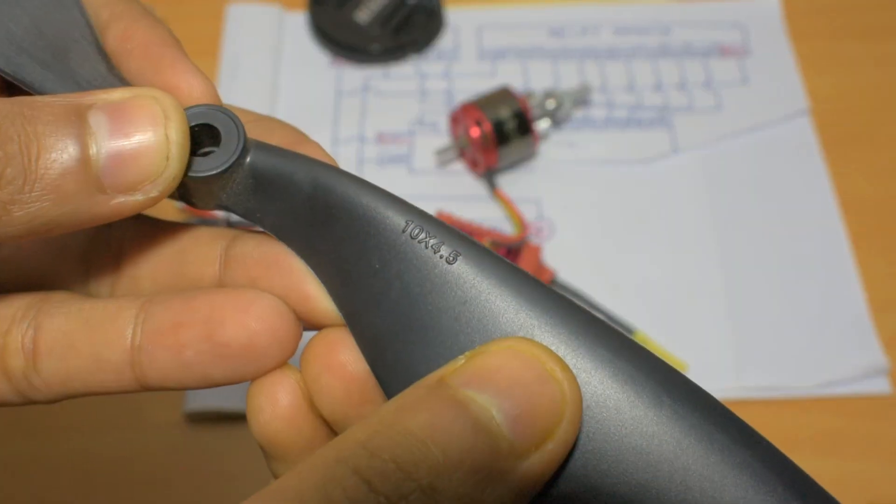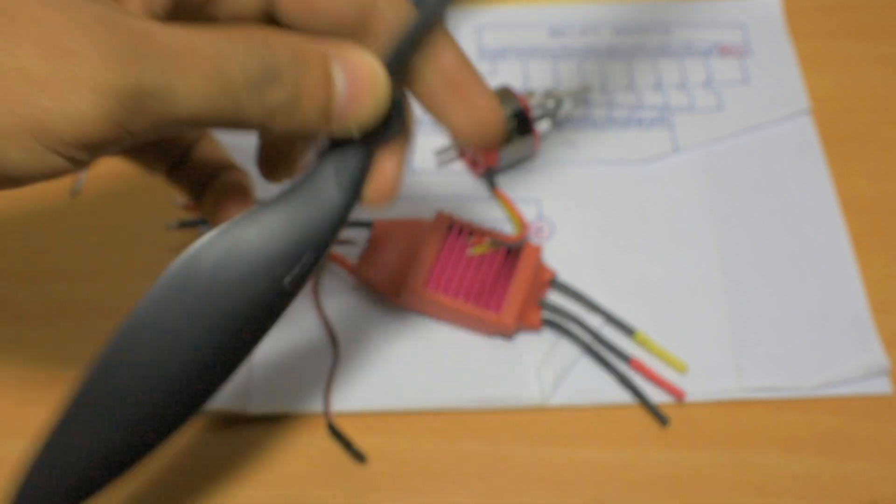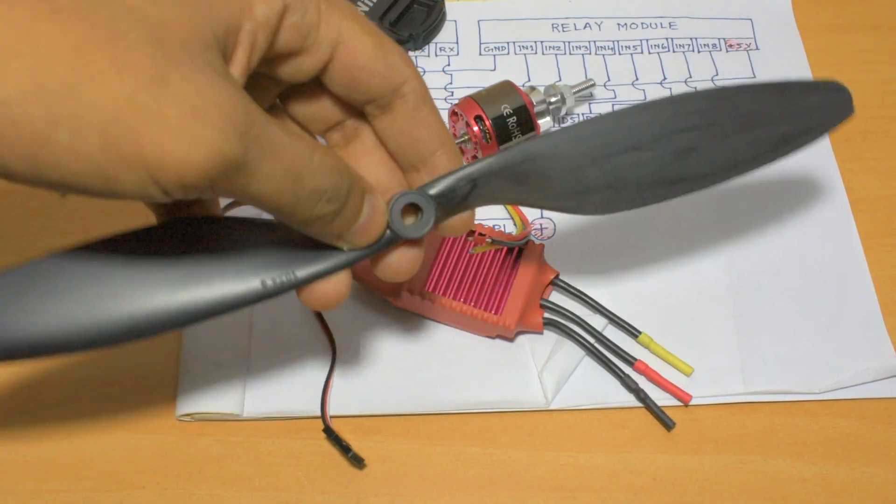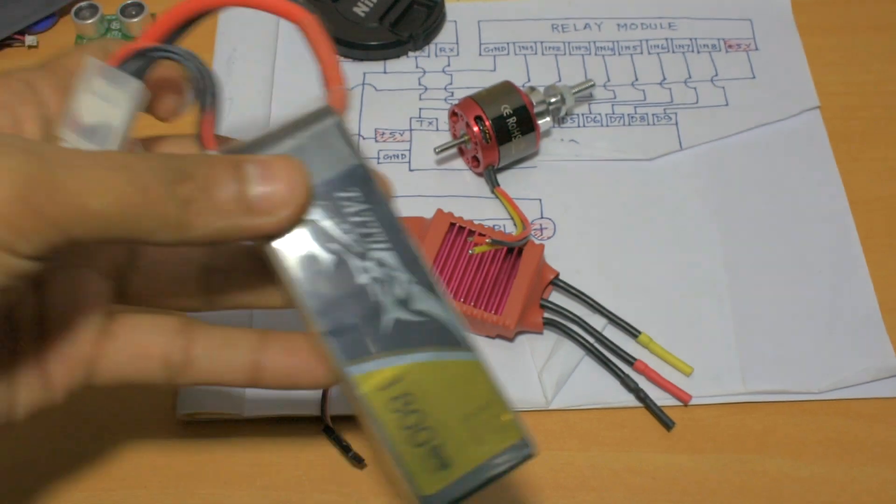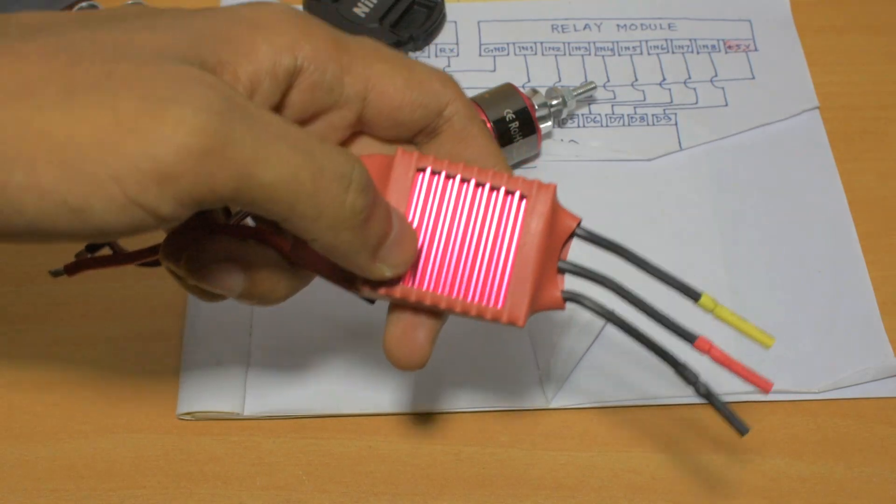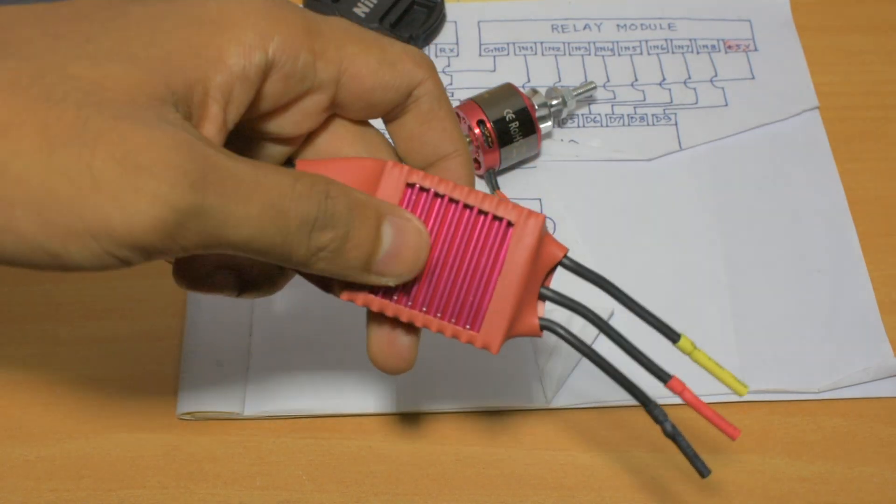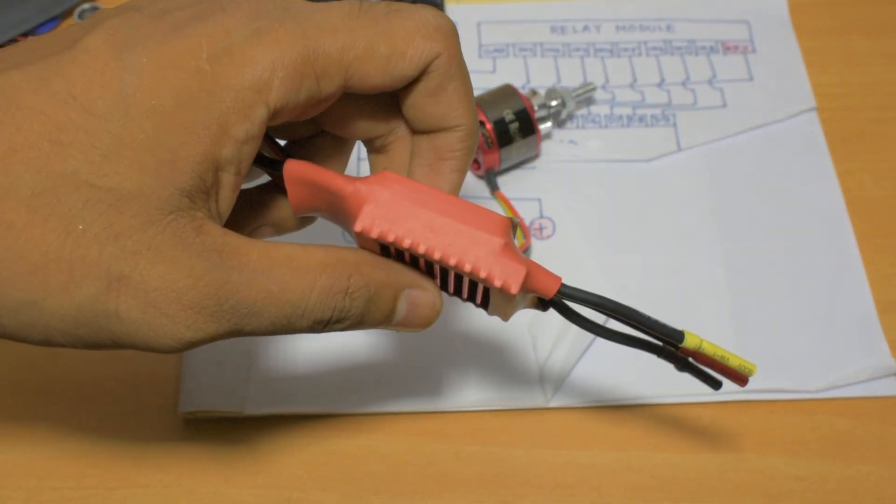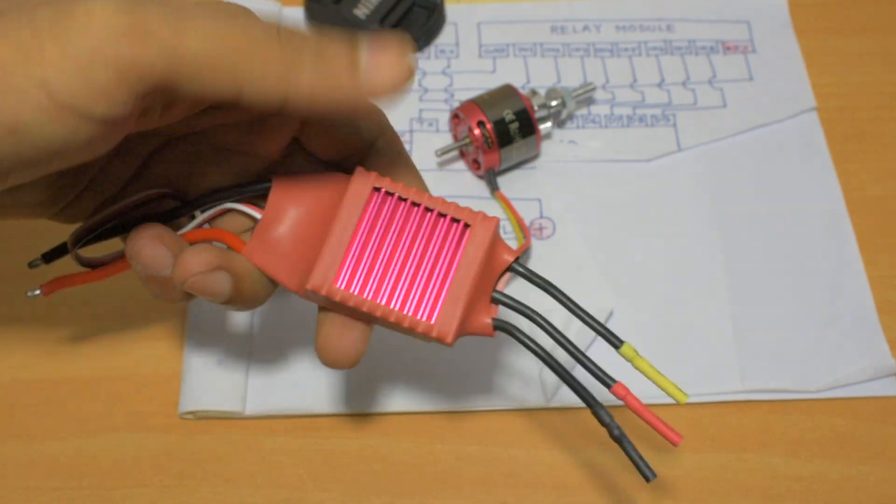I ran it for 15 minutes in full throttle with this 4s lipo. I can say one thing: the result is pretty shocking. After 15 minutes of runtime in full throttle, it's just a little bit warm. When the throttle is below 70 percent, it's not even warm.